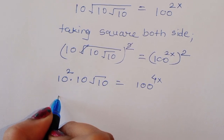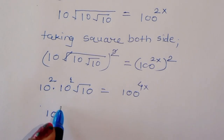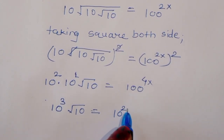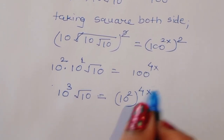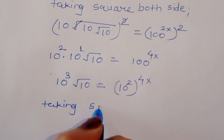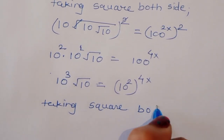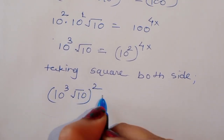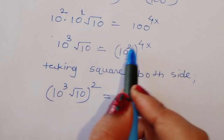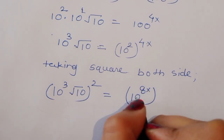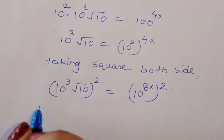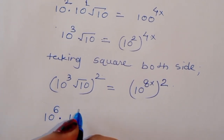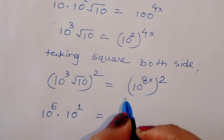Taking square again, we will get 10 raised to 1 here, 10 raised to 2 and 1, that is 10 raised to 3. Square root of 10 is equal to 10, whole square root of 10, whole square is equal to 10 raised to 4 to the 8. So 10 raised to 8x. Now we can write this: 10 raised to 3 to the 6. That is 10 raised to 6 times 10 raised to 1 is equal to 10 raised to 16x.